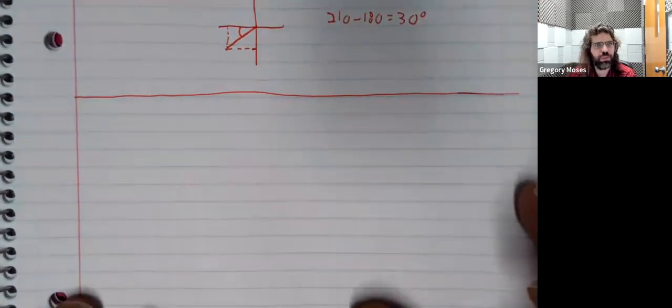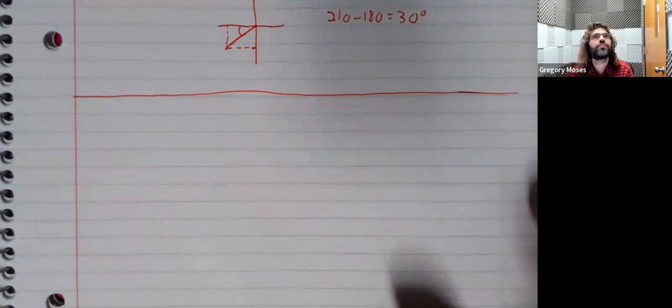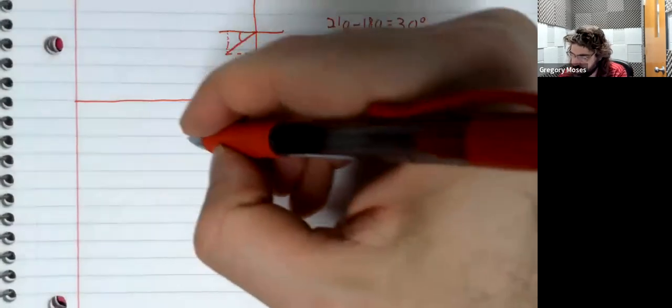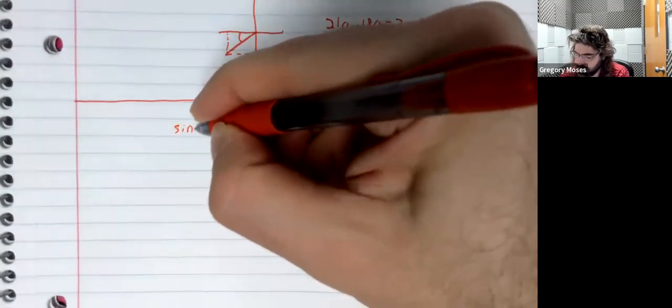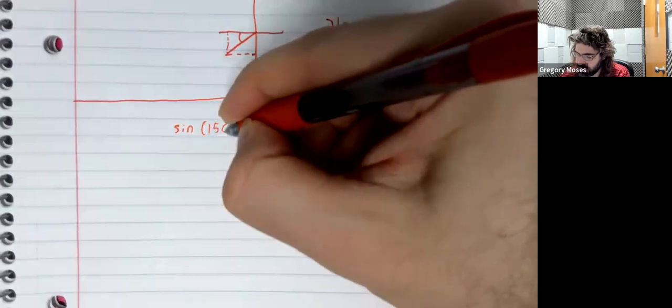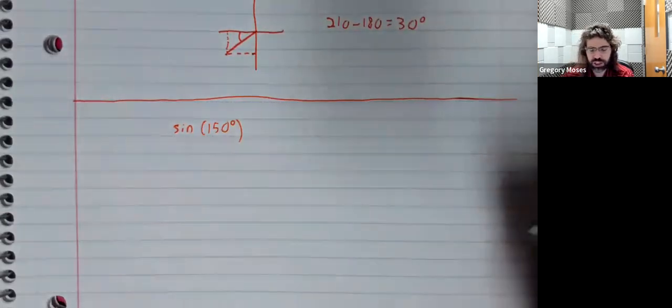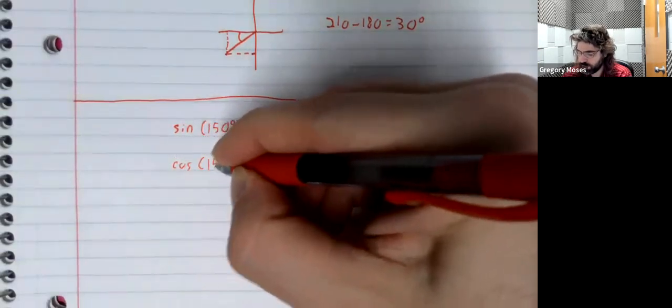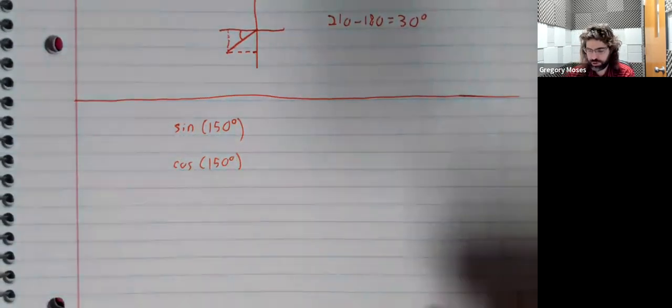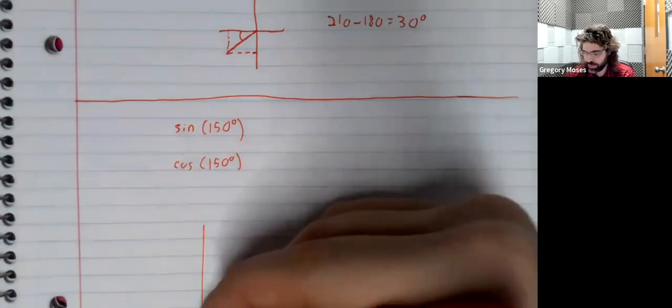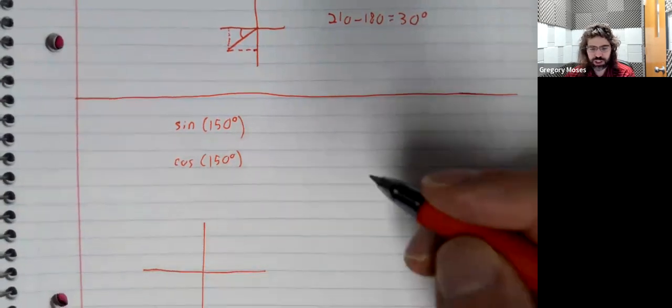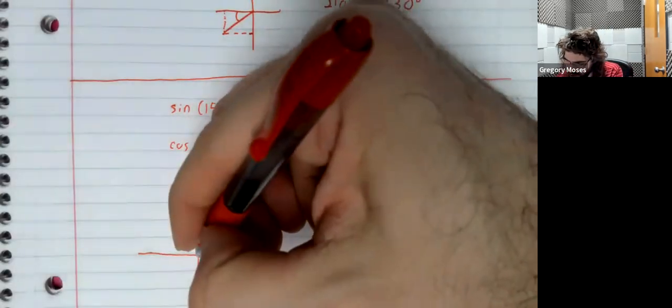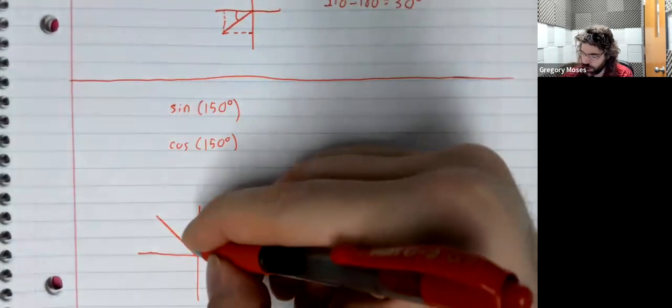Doing another example. Let's look at 150 degrees. The sine of 150 degrees. The cosine of 150 degrees. 150 degrees is between 90 and 180. So it's in the second quadrant.